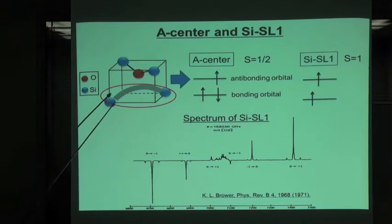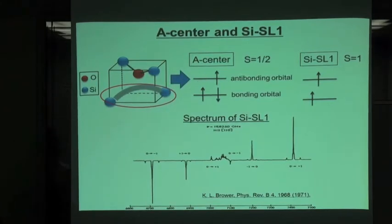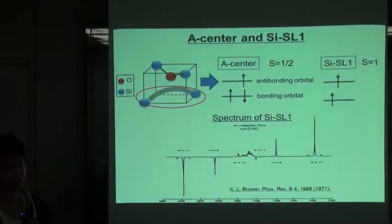This defect consists of oxygen and vacancy. The dangling bonds from two silicon atoms form the molecular orbital. The spectra of the A center comes from the spin state S equal 1/2. And the spectra of the SI-SL1 comes from the spin state S equal 1.